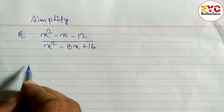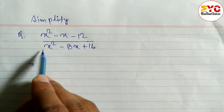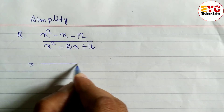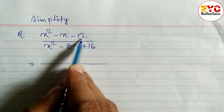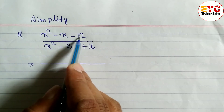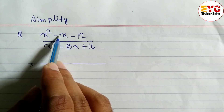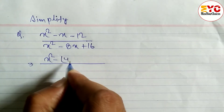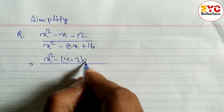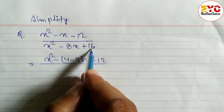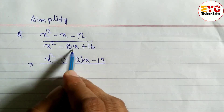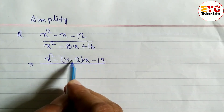You can see here we have a new question: x² minus x minus 12 in the numerator, x² minus 8x plus 16 in the denominator. We have to factorize. We need factors whose multiplication is 12 and subtraction is 1. The factors are 4 and 3: 4×3=12 and 4−3=1. And for the denominator: multiplication is 16 and addition is 8, so 4×4=16 and 4+4=8.